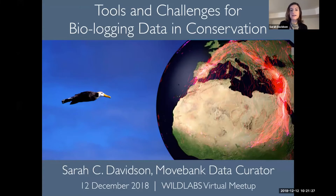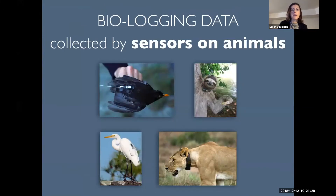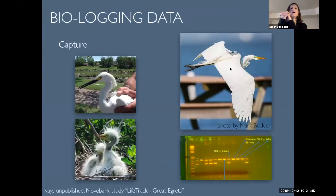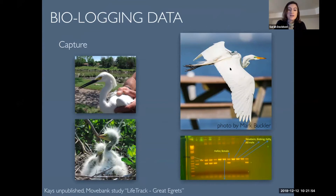What are biologging data? By biologging data, I'm talking about data collected by sensors on animals. And why do we consider those big data? Every sensor deployment starts with a capture of an animal, and that capture event is similar to traditional species occurrence events where we might have one or a few time points for an individual.